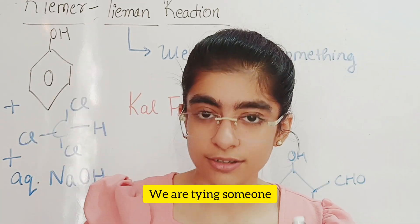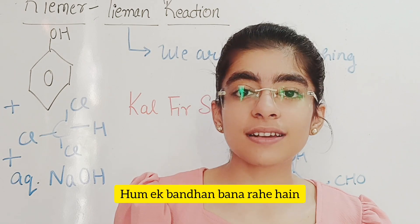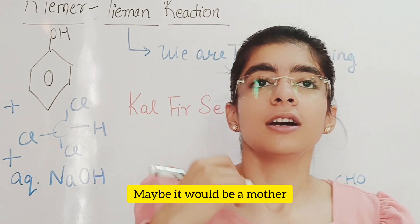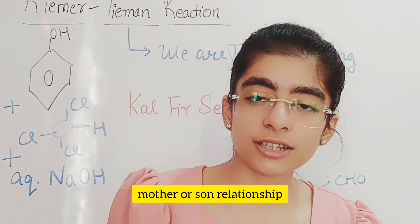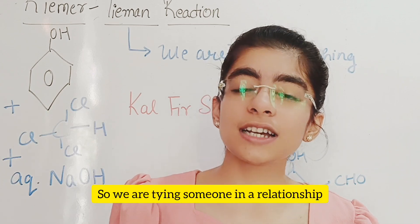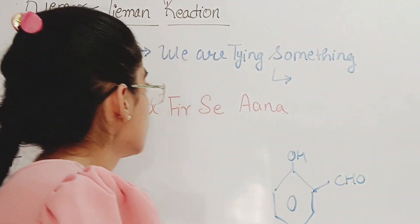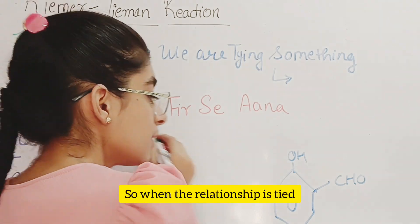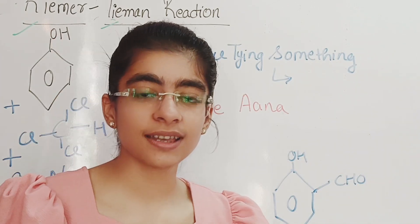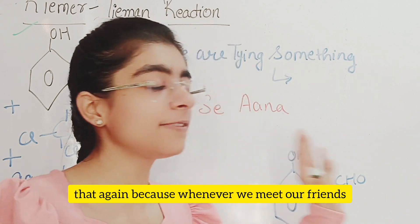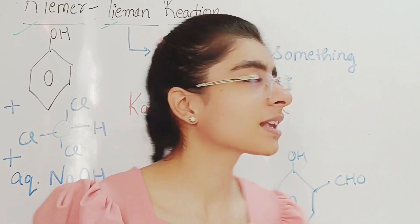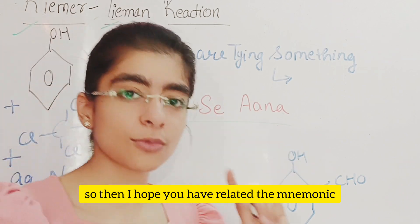So we are tying someone — we are making a bandhan. Think of relationships like a mother-daughter or mother-son relationship, or it could be any relationship. Like Raksha Bandhan, we are tying someone in a relationship. When the relationship is tied, the person says KAL FIR SE AANA — they want to meet again. Whenever we meet our friends, we tell them KAL FIR SE AANA because we want to meet them again. So I hope you have related the mnemonic with the reaction name.